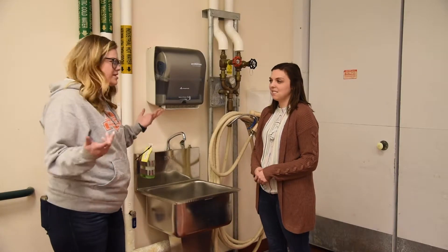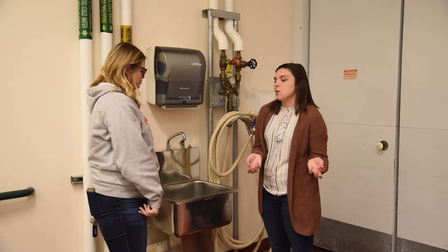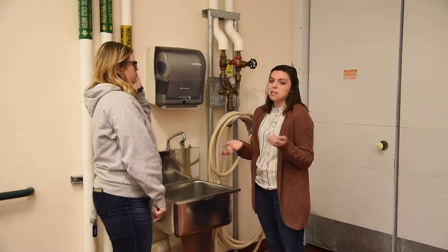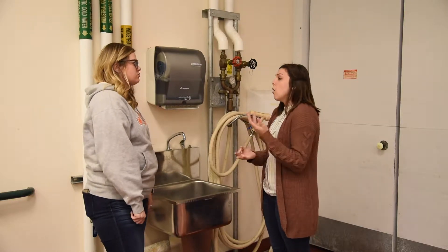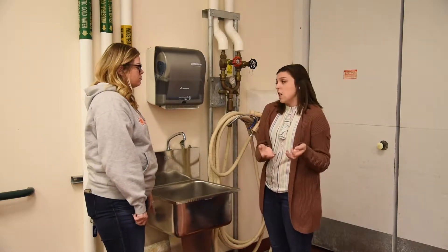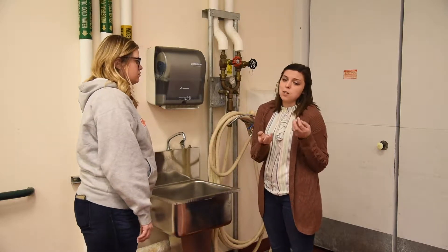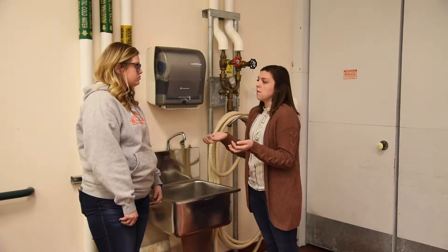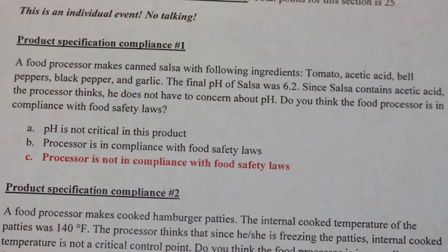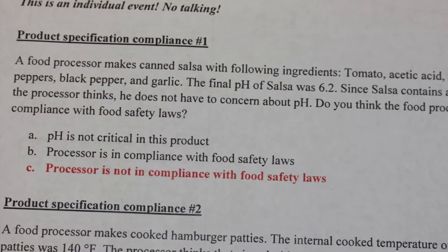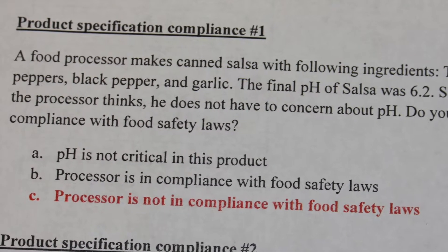The second part of the food safety and quality practicum relates to product specification compliance. Individuals are given five questions or scenarios relating to product specifications, which can range from cooking temperature to final pH or nutrition. When studying, focus on compliance for cooking temperatures — especially for meat products — and important acidified products like canned goods. For example, for acidified products like canned salsa, the pH should be 4.6 or lower; if the final pH is 6.2, that indicates the product is not in compliance with food law.